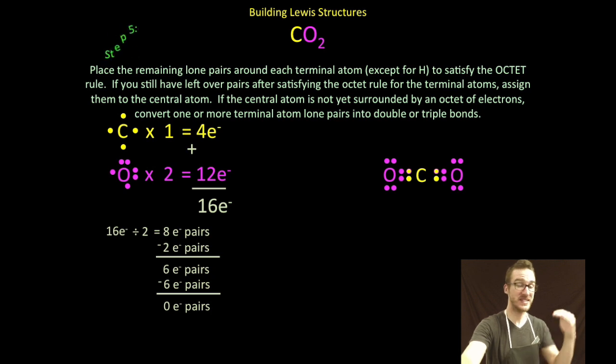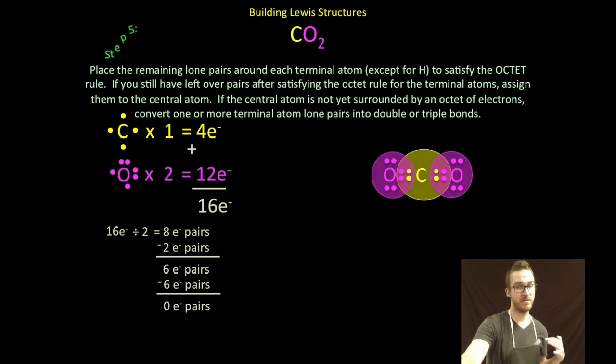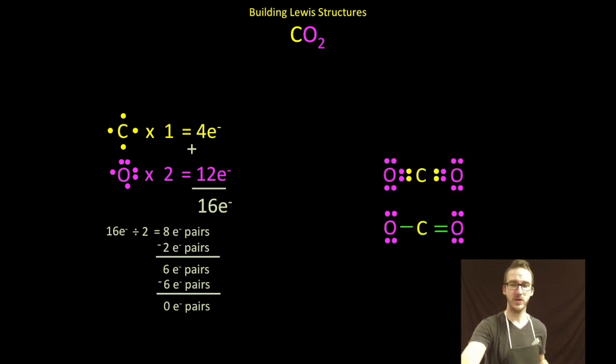Again, a couple of Venn diagrams to help you recognize which electrons are being shared and to make sure that each of the elements has an octet. In this case everybody's got an octet. Don't forget though you can represent those shared pairs of electrons using dashes.